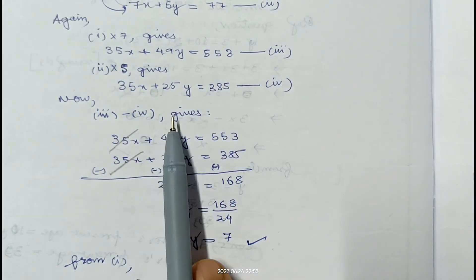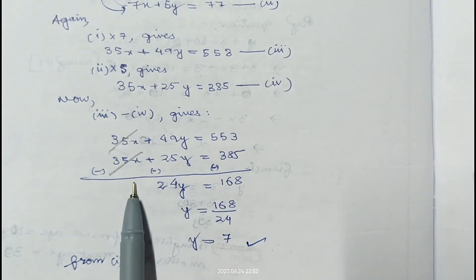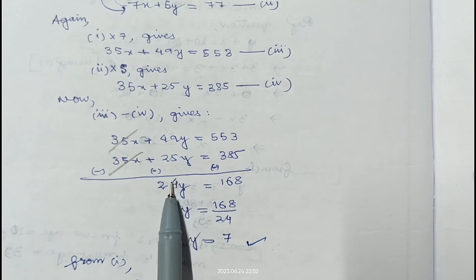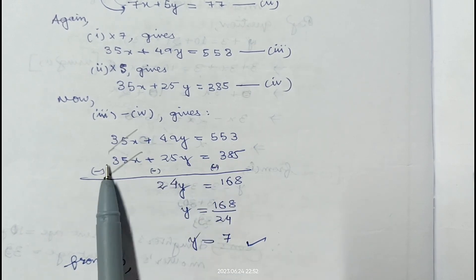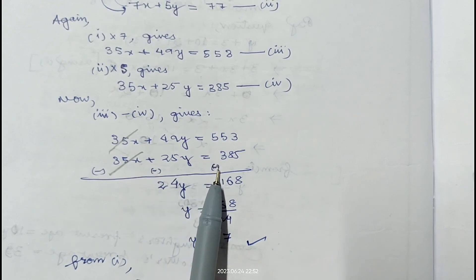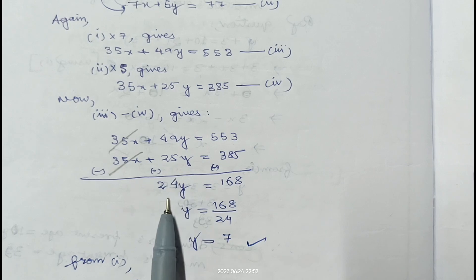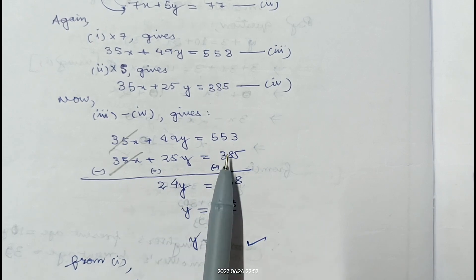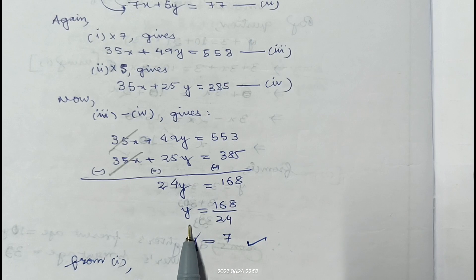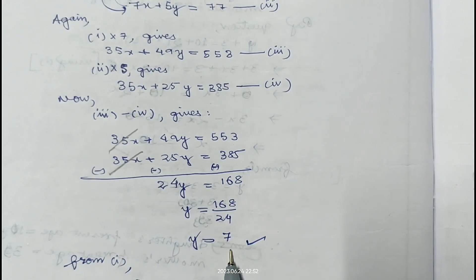Subtracting: 35x plus 49y equals 553 minus 35x plus 25y equals 385. Changing signs, the x terms cancel. 49y minus 25y gives 24y equals 553 minus 385, which is 168. So y equals 168 divided by 24, therefore y equals 7.